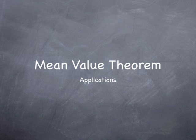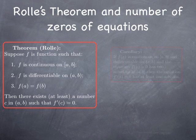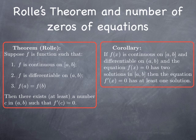Now we're going to take a look at some of the consequences of the mean value theorem. The first consequence we want to look at is in fact a consequence of the particular case of the theorem of Rolle, and involves the number of zeros of an equation.